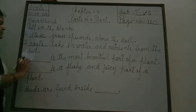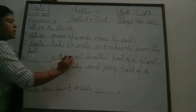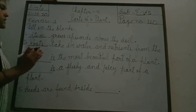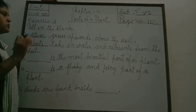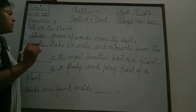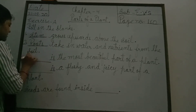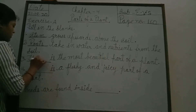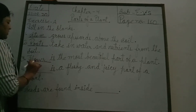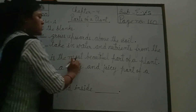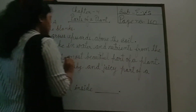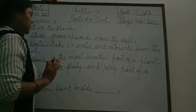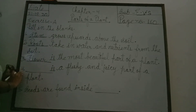Question number 3 is: dash is the most beautiful part of a plant. Plants ke aise koon se part hain jho sab se beautiful hoote hain? The answer is flower. The spelling is F-L-O-W-E-R. Flower is the most beautiful part of a plant. Flower plant ke sab se beautiful part hoote hain.